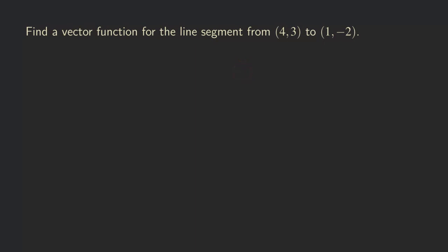What we want to do is come up with the general form of the vector function for a line segment first, and then based on that function, figure out each part. So let's recall: the vector function for a line segment is still going to be really similar to the vector function for a line in space. In that case, we use R0 plus T times V.